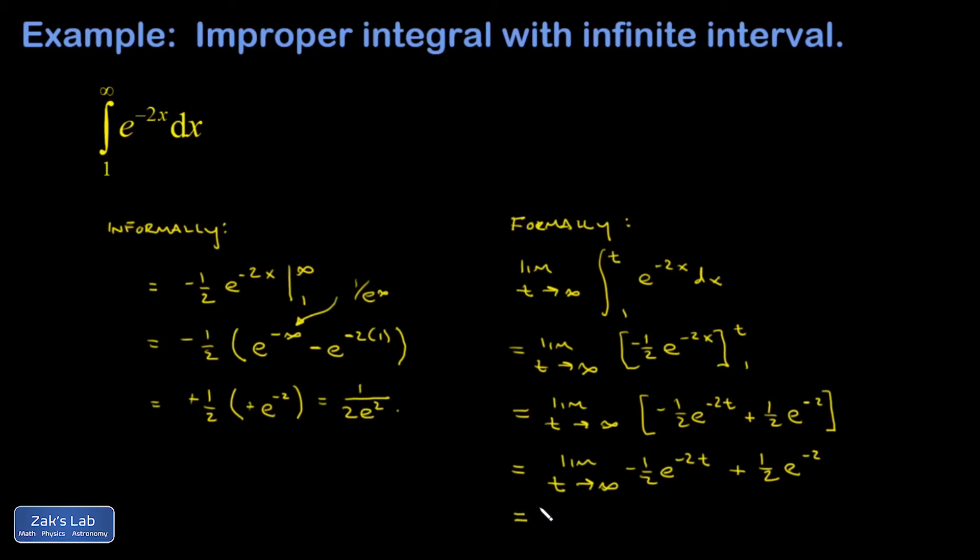I still need to know that the limit as t goes to infinity of e to the negative 2t is equal to zero. In other words, I'm still using the same old argument that 1 over e to the infinity is zero. We haven't proven that formally, so we're still not being totally rigorous. We're just kind of pretending that we're going to be rigorous by reformulating this as a limit.